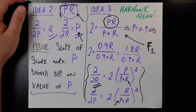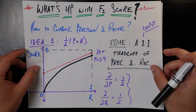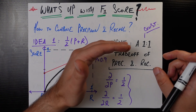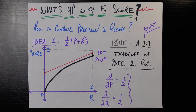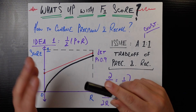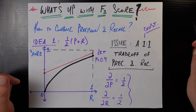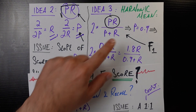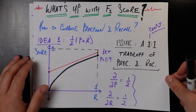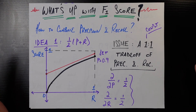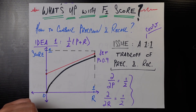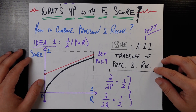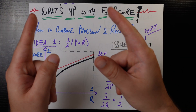I hope you learned something about why the F1 score looks the way it does and what properties it has, and why simpler formulations like the arithmetic mean don't have everything we want — motivating this more complicated form. Building up ideas one and two helps motivate idea three. If you liked this video, please like and subscribe for more videos just like this one. Thank you so much, and I'll see you all next time.